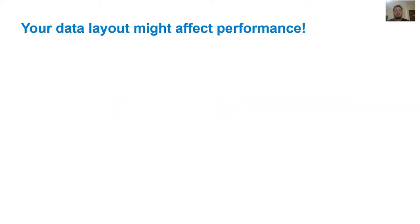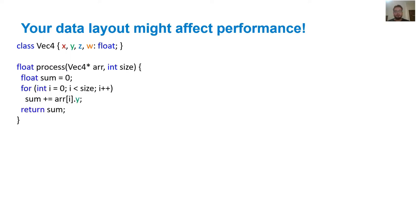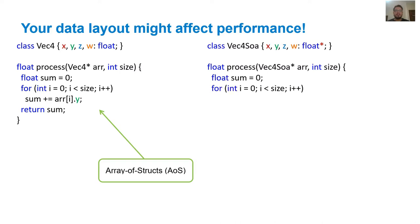For example, let's say we have a definition of four-dimensional vectors called vec4, and let's say we write a loop to calculate the sum of an array of these four-dimensional vectors, but only with respect to the y-coordinate. This, for the record, is called an array of structs layout. Now let's rewrite this code so that we no longer have a vec4 class, but have four arrays instead, one for each coordinate. This is what we call a struct of arrays layout.